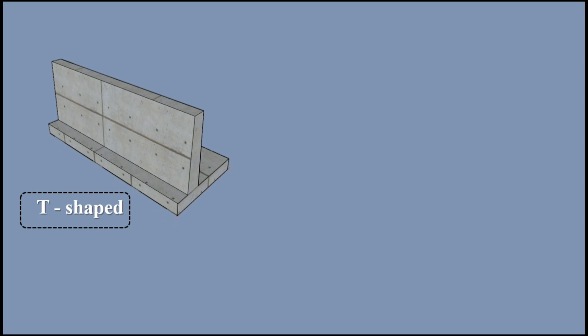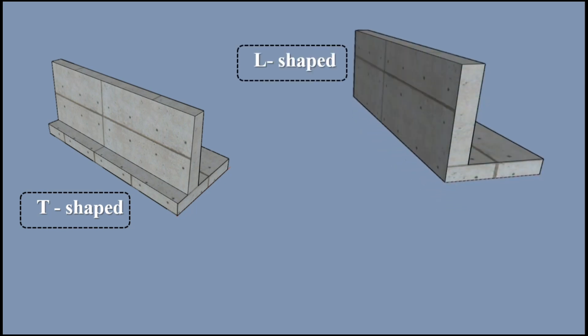Cantilever retaining walls are of three types: 1. T-shaped, 2. L-shaped, and 3. T-shaped with shear key.